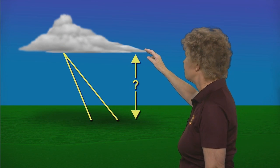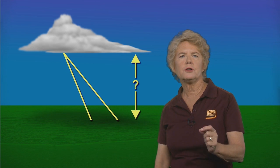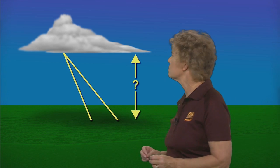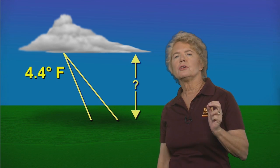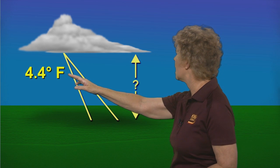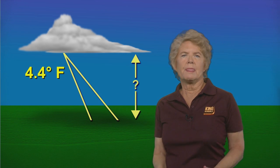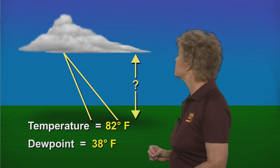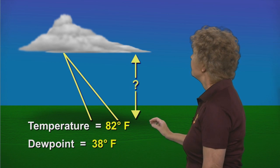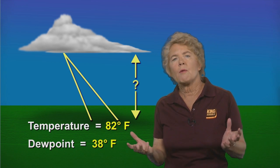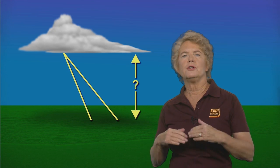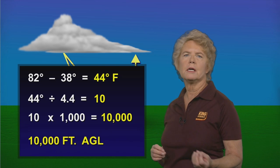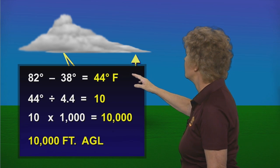You can calculate the altitude at which the base of cumulus clouds will form. You do it by knowing the temperature and the dew point and the spread between them, because temperature and dew point get closer together with altitude at a rate of 4.4 degrees Fahrenheit per thousand feet. For example, if the surface air temperature is 82°F and the dew point is 38°F, the difference is 44 degrees Fahrenheit.